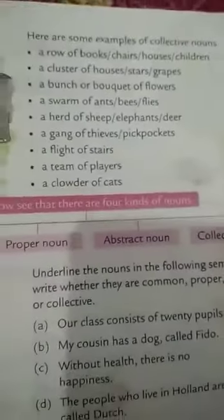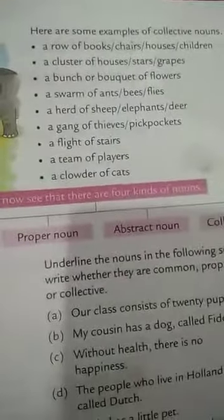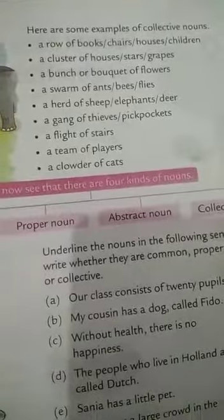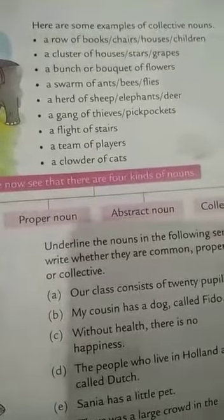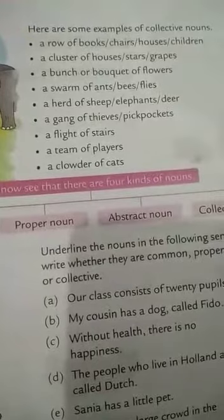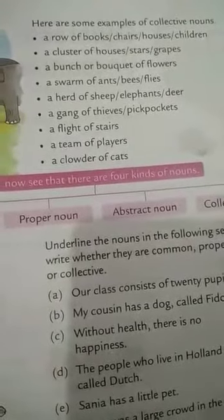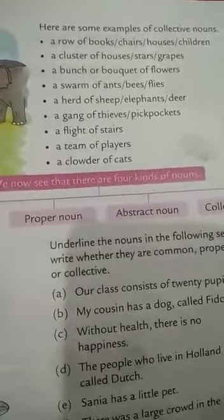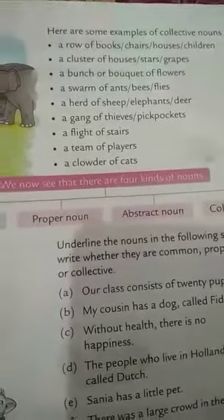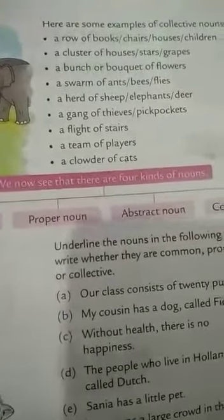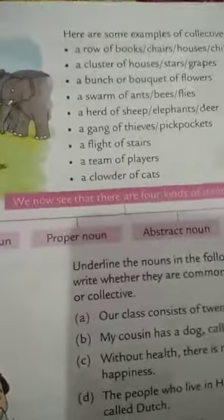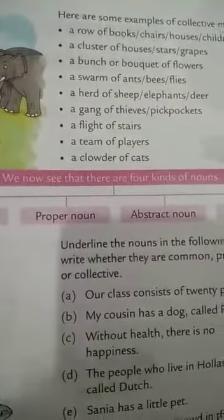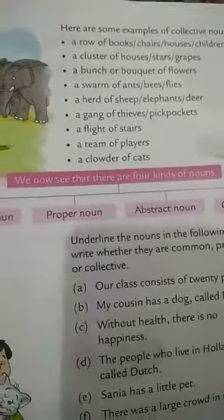Here are some examples of collective nouns. A row of books. A row of chairs. A row of houses. A row of children. A cluster of houses. A cluster of stars. A cluster of grapes. A bunch or bouquet of flowers. A swarm of ants. A swarm of bees. A swarm of flies.